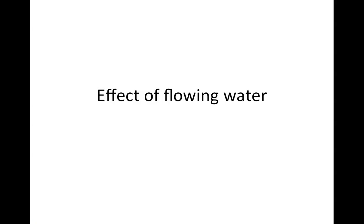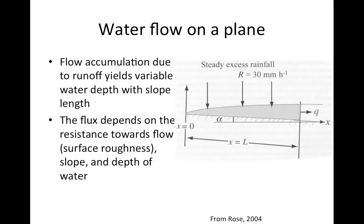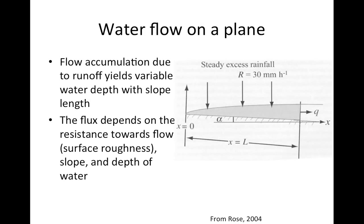Now we're going to look at the effects of flowing water on erosion and the transport processes that impact sediment movement in overland flow. Let's recap water flowing over a hill slope. We can describe some of those equations, often as a kinematic type wave. At x equals zero, we have the top of the hill with no overland flow. As rainfall intensity is high and infiltration rate is low, we get a build-up of the depth of overland flow as we move down the hill. As the flow deepens, the water flux increases, and the flow has enough energy to start moving soil particles down the slope.